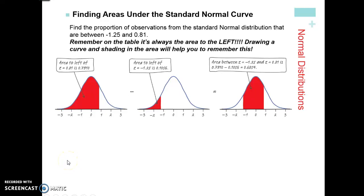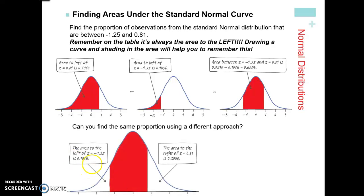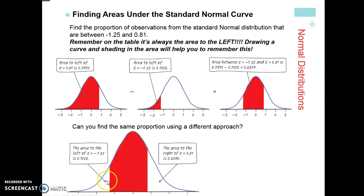In the last slide I was briefly going over finding areas under the curve. I want to make sure you understand this next approach. The second way to do this is to find the area under the curve on the right-hand side and then on the left-hand side. So you can find the area to the left — when you look up negative 1.25 on your chart, that's always going to be the area to the left. Then you subtract that area and find the area to the right of z equals 0.81.